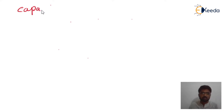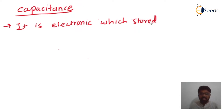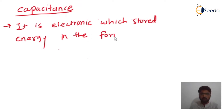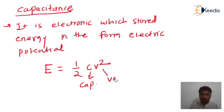What is meant by capacitance? A capacitor is an electrical device which stores energy. It has the capability to store energy in the form of electric potential. The energy stored is given by E = ½CV², where C is the capacitance, V is the voltage of the circuit, and E is the energy of the capacitor.